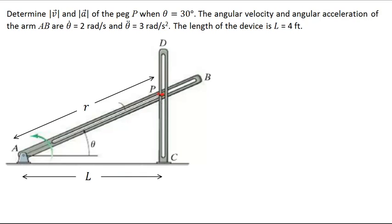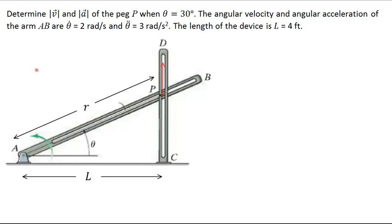The linkage CD is fixed in a vertical position and linkage AB rotates counter-clockwise. It has a counter-clockwise angular velocity of 2 radians per second and an angular acceleration of 3 radians per second squared. The length of the device is 4 feet, and point P is constrained to move in the vertical direction by linkage CD.